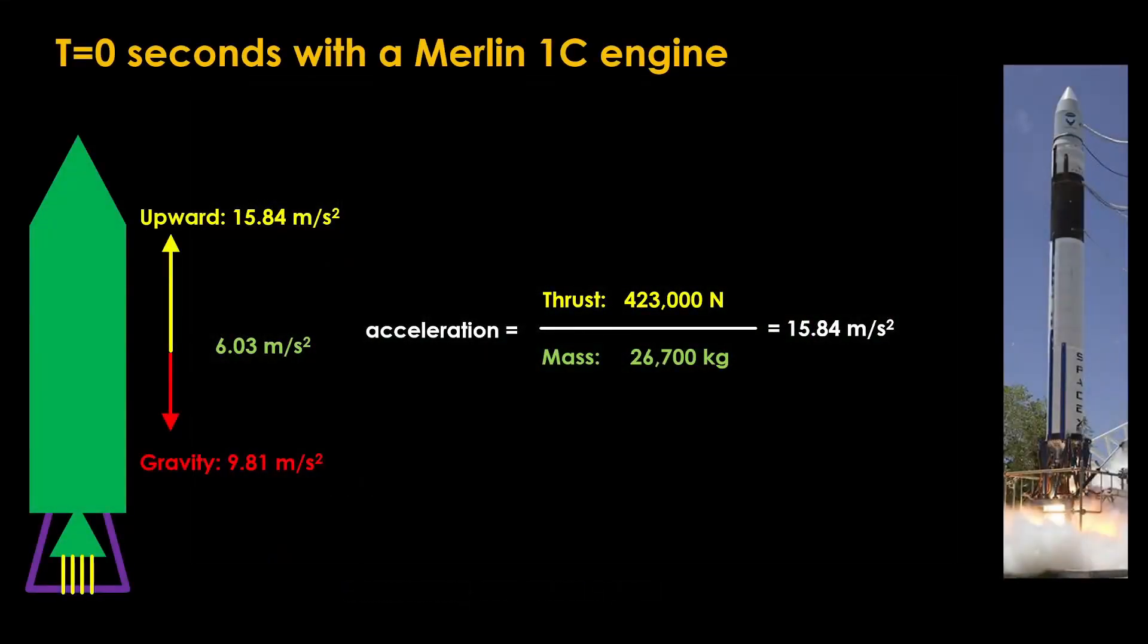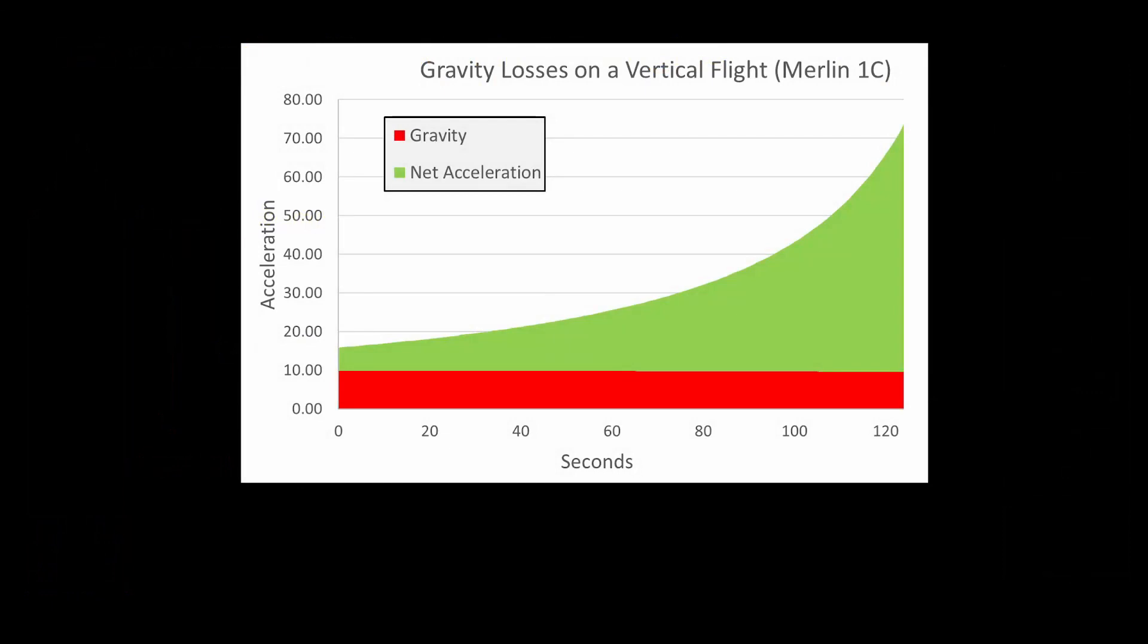We can switch to a Merlin 1C engine, which produces 423 kilonewtons, or 23 percent more thrust than the Merlin 1A. That nearly doubles the net acceleration to around 6 meters per second squared. Here we can see the effect. The Merlin 1C burns the propellant faster, so it's done in only 125 seconds, and only wastes 1,216 meters per second on gravity losses. That is great.